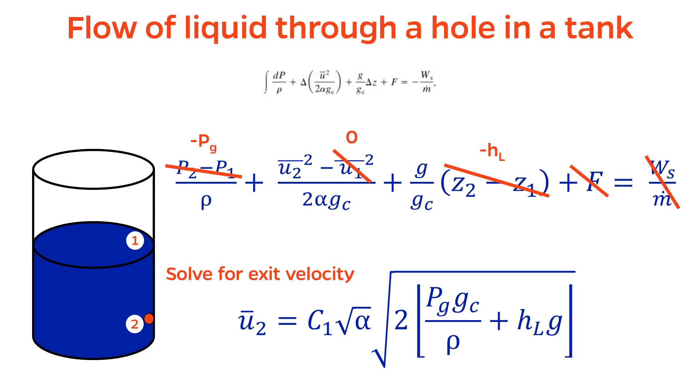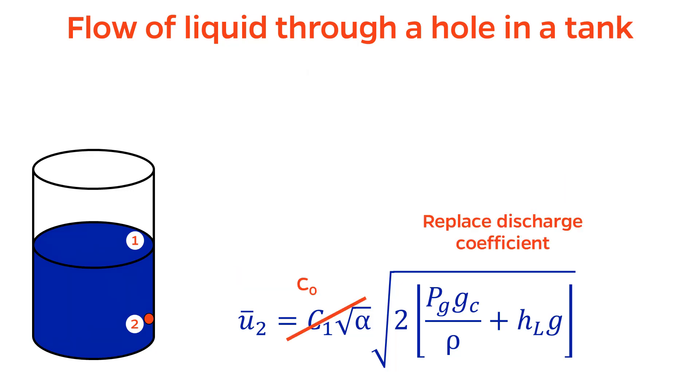Solving for exit velocity and reintroducing the discharge coefficient yields the following expression. Exit velocity equals C1 square root of alpha times square root of 2PgGC over rho, plus 2HLG. Once again, I'll do the same thing I did last time, replacing C1 square root of alpha by C0. This holds the same meaning as it did previously, something between 0.61 for a rough, jagged hole, and 1 for a smooth nozzle.